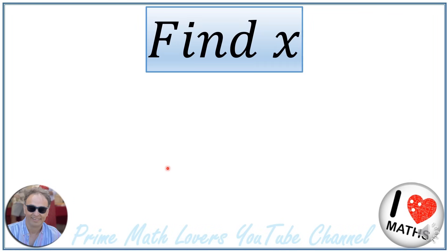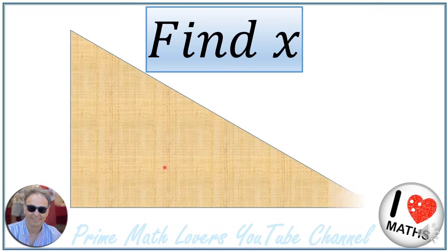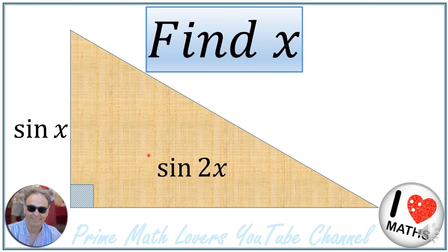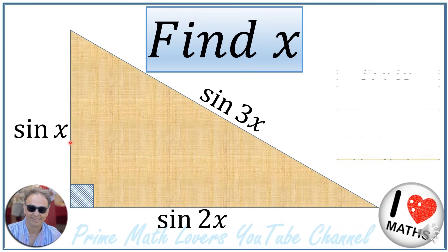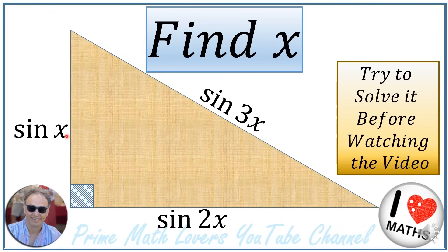Hello everyone, welcome to Prime Math Lovers YouTube channel. Today in this video I'm going to solve these interesting questions. We have a right angle triangle where one side is equal to sine of x, another side is equal to sine of 2x, and the hypotenuse is equal to sine of 3x. We are asked to find x.